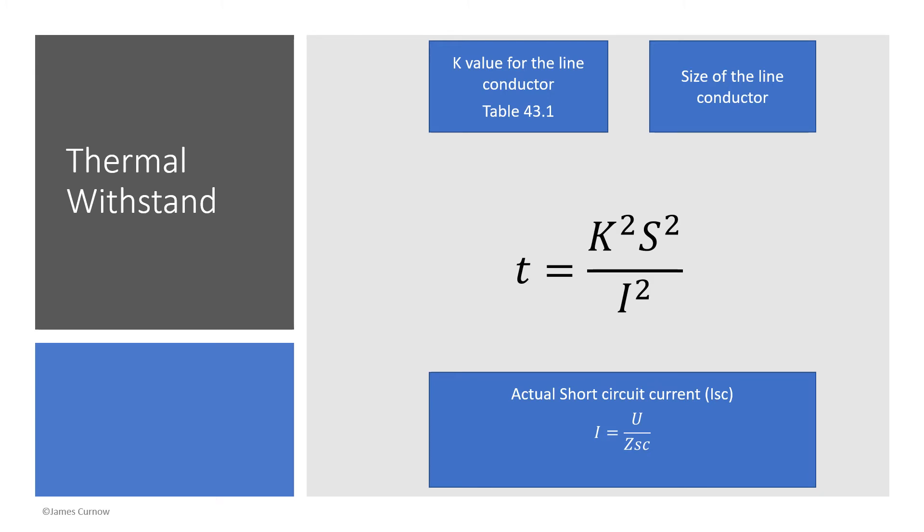S is the size of the line conductor and I is the actual short circuit current which we find by dividing the voltage by the Zsc. Now Zsc is the loop between line and neutral so you may have also seen this as Z brackets L to N on your test kit.